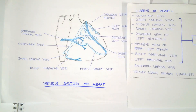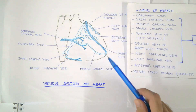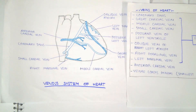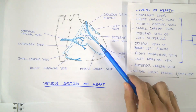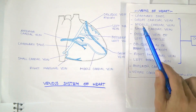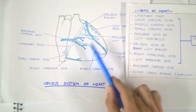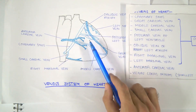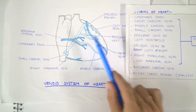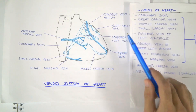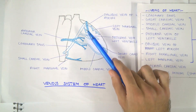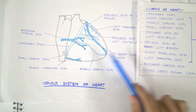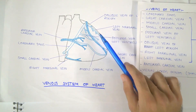Now we'll see which veins of the heart drain into the coronary sinus and then into the right atrium. First, the great cardiac vein, which lies on the anterior surface of the heart in the interventricular groove. Then the middle cardiac vein, which lies on the posterior surface. The small cardiac vein, the posterior vein of the left ventricle also on the posterior surface, and the oblique vein of the left atrium.